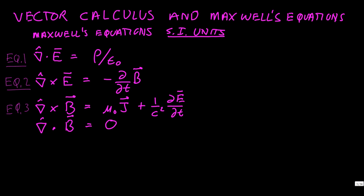We're using SI units here: meters per second for velocity, charge in coulombs, magnetic field in Tesla, and electric field in volts per meter. Charge density and current density enter these equations. The last equation, equation 4, specifies the divergence of the magnetic field is equal to zero.